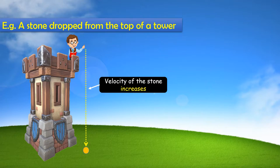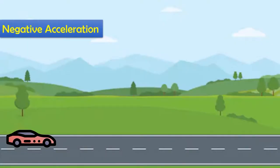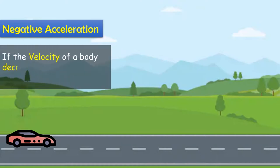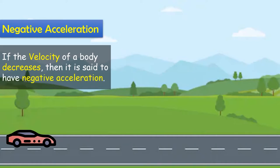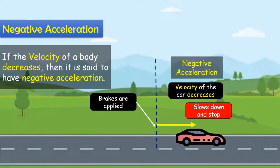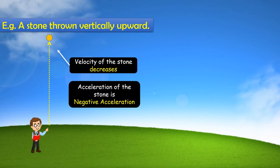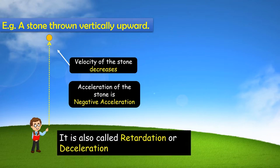If there is an acceleration in the positive direction, consider it positive acceleration. Negative acceleration occurs when a body slows down. If the body decelerates — such as when you apply brakes — that is negative acceleration, also called retardation or deceleration.